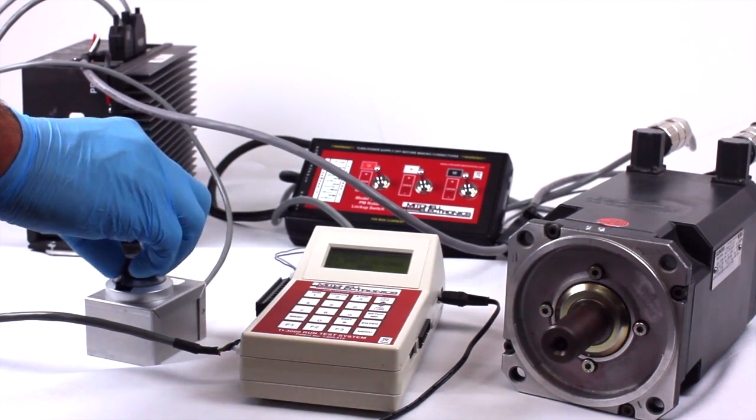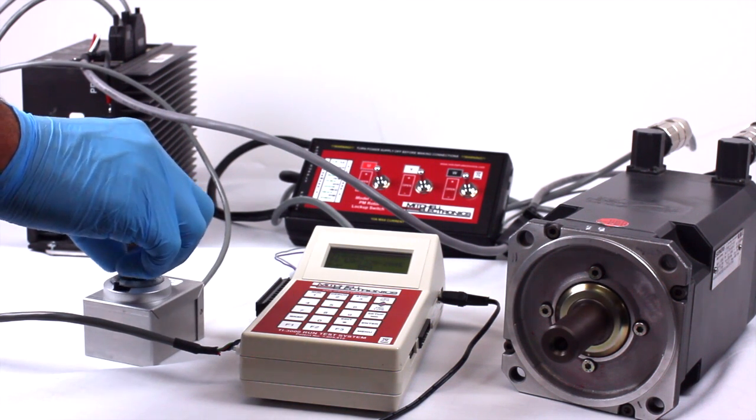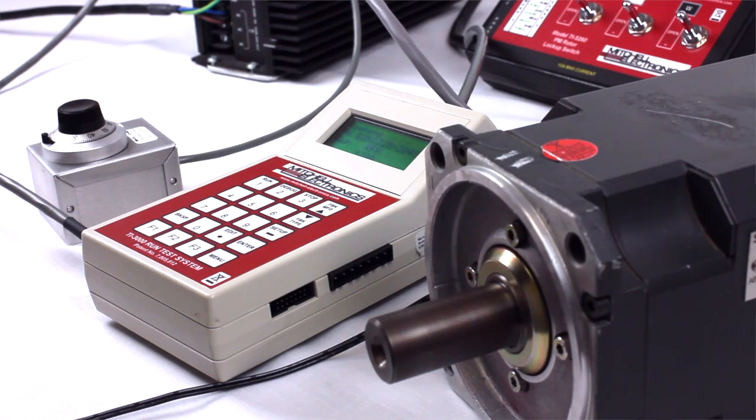Now turn the potentiometer counterclockwise to run the motor at max speed in the reverse direction. The max speeds should match in both directions.